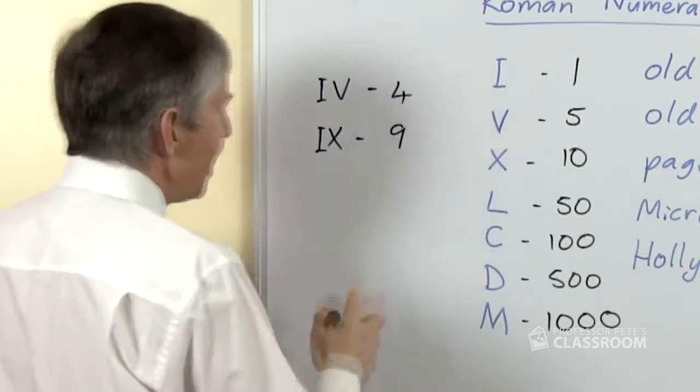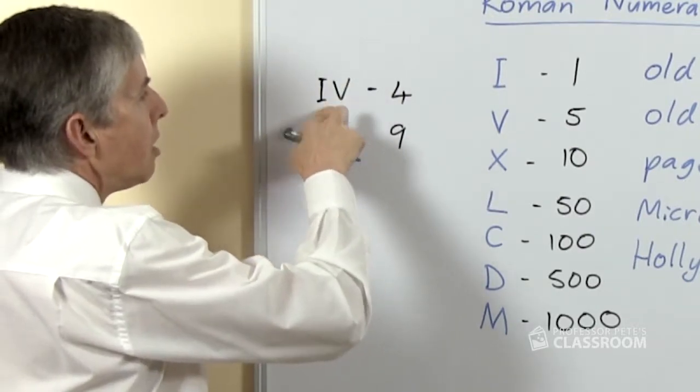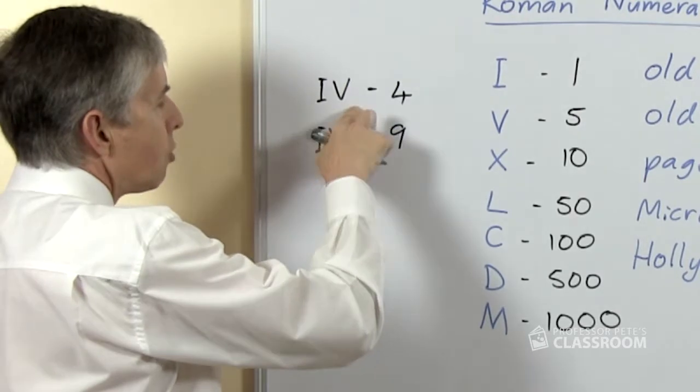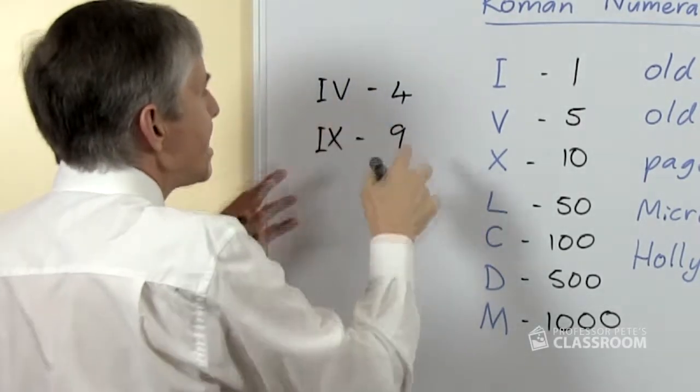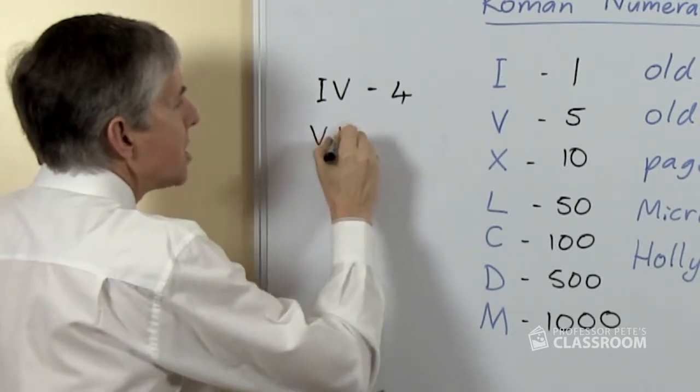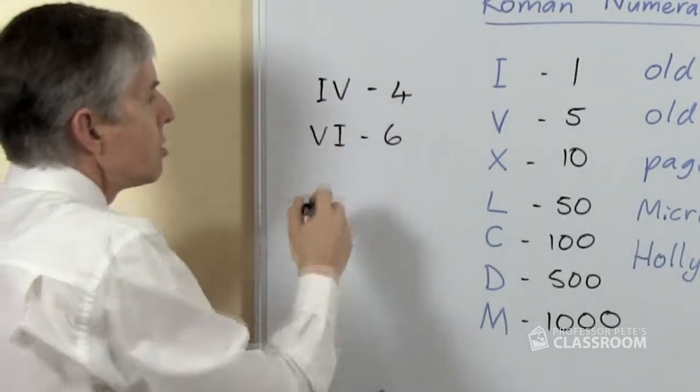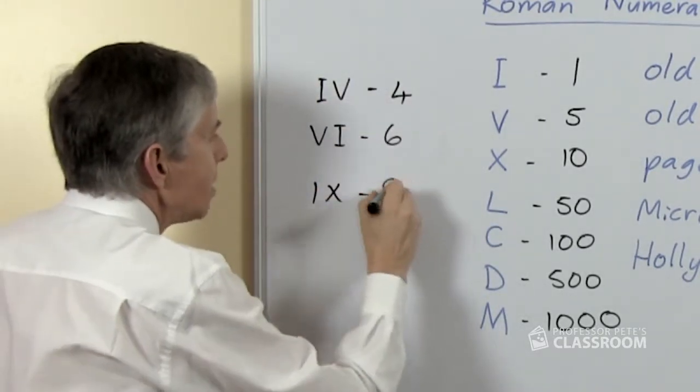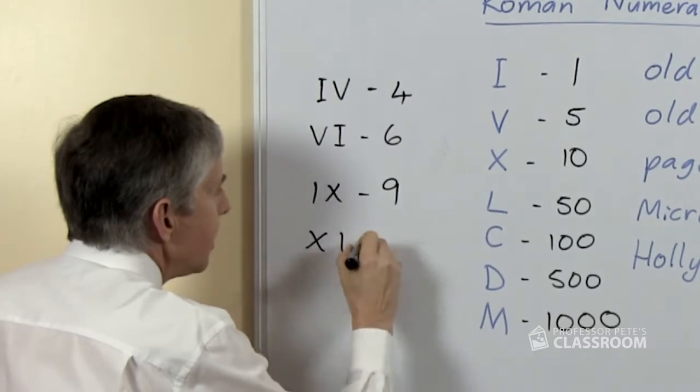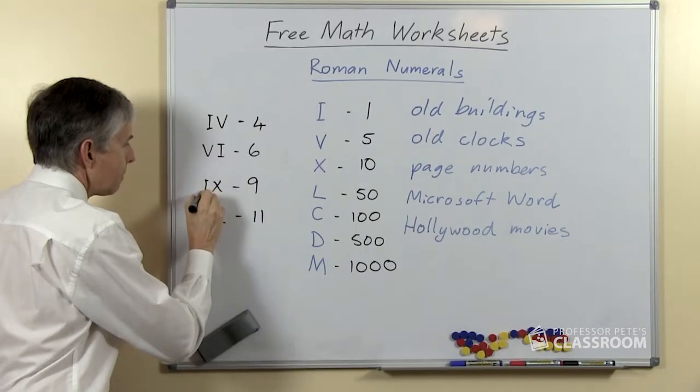If we have a small value in front of a big value of the next place or the same place, then we take it away. I'll just show you: the symbol for 6 is the other way around—V then I—so you do have to be a bit careful because you might get those two confused. And the same with this: here's 9 and here's 11, and that's the same idea.